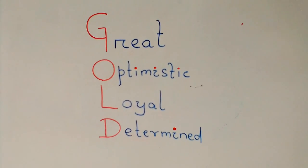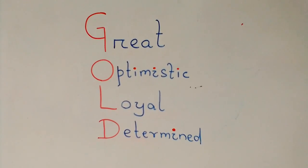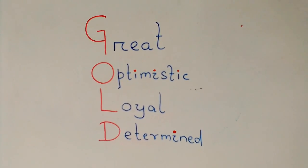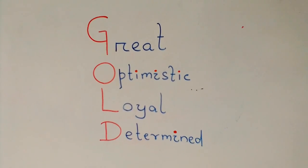G for Great - one should be great in nature. O for Optimistic - one should maintain positive thoughts in everything.